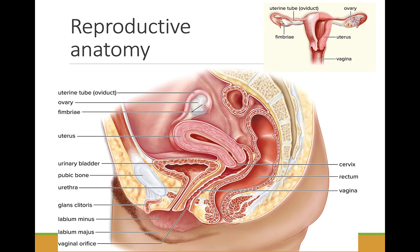Now we'll look at the reproductive anatomy of people with a vagina, uterus, and ovaries, typically assigned female at birth. The gonads that produce gametes, the egg cells, are the ovaries.